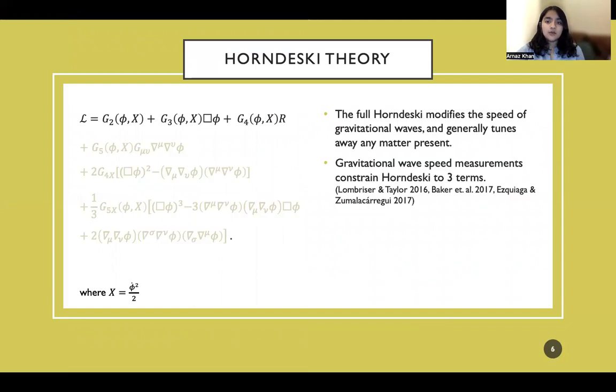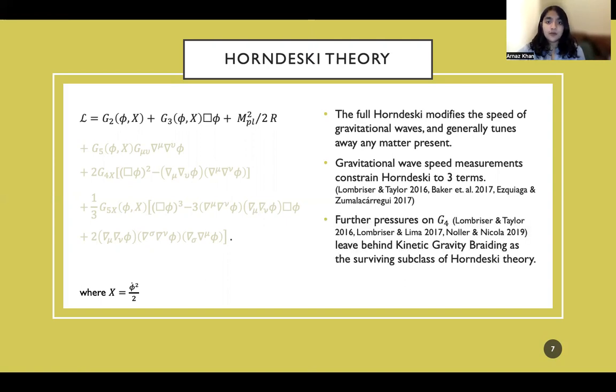But due to the recent data from gravitational wave speed measurements, we can constrain Horndeski theory to just three terms, g2, g3, and g4. But there are further pressures on this g4 term. So for simplicity, and in order to meet observations better, we retain Einstein gravity for that term in this minimum model. What's left behind is known as the kinetic gravity braiding theory. This is considered to be the surviving subclass of Horndeski theory.